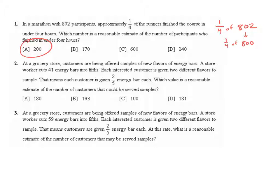Question two says, at a grocery store, customers are being offered samples of new flavors of energy bars. A store worker cuts 41 energy bars into fifths. Each interested customer is given two different flavors to sample. This means that each customer is given two-fifths energy bar each. Which value is a reasonable estimate of the number of customers that could be served samples?